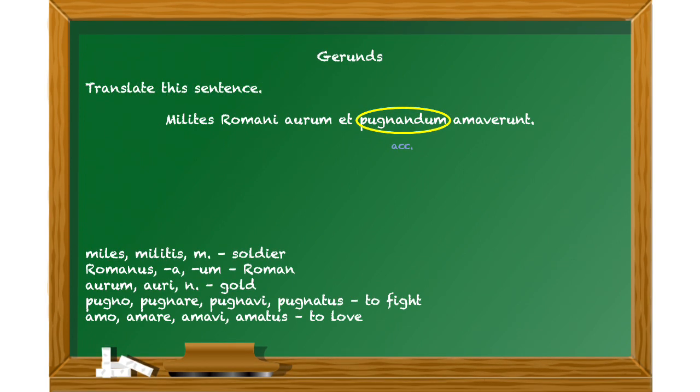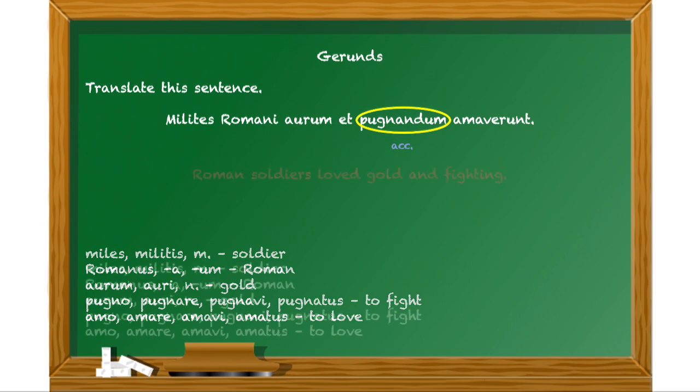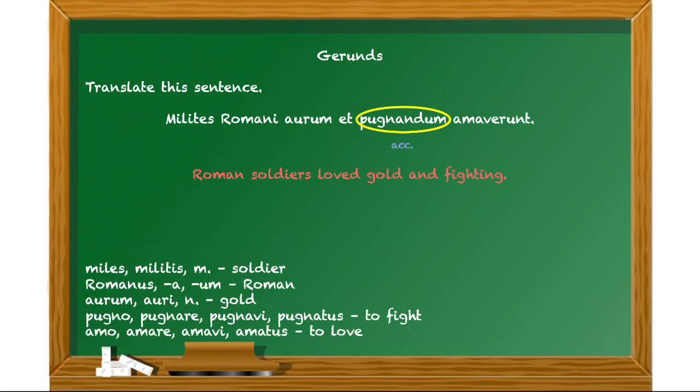Now take a moment and see if you can translate the sentence. You should have come up with: 'Roman soldiers loved gold and fighting.' Gold is obviously a noun — it's a thing. 'Fight' is definitely a verb, but again, in this sentence it's functioning like a noun. They loved what? They loved fighting.